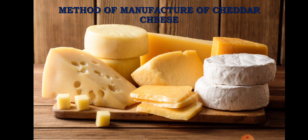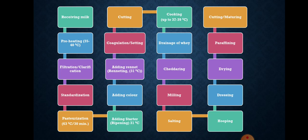Now we will study the method of manufacturing cheddar cheese in detail. This is the process flow chart or flow diagram of manufacturing cheddar cheese. Every unit operation involved in the manufacture of cheddar cheese we will see in detail. The first unit operation is receiving milk. Only high-grade milk can yield high-grade cheese.